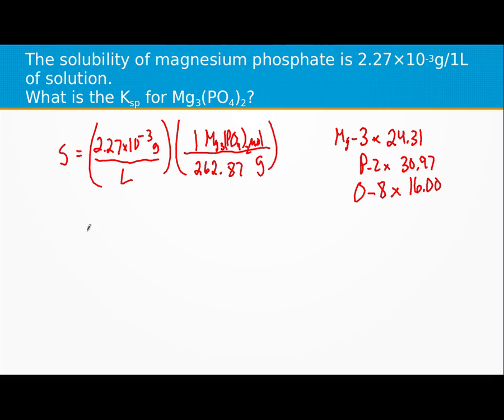And then we're going to use that along with what we know our KSP is. KSP is made up of magnesium ions and phosphate ions. And there would be two of these for every three of those.